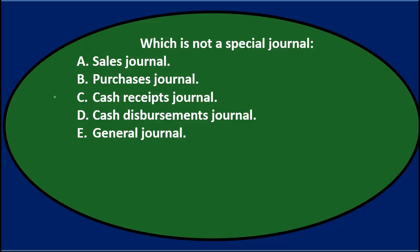Next question: Which is not a special journal? A. Sales journal. B. Purchases journal. C. Cash receipts journal. D. Cash disbursements journal. E. General journal.